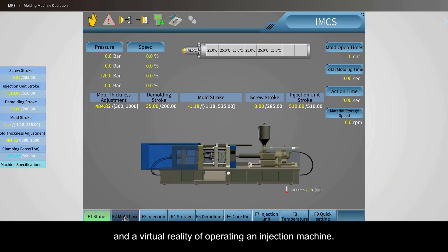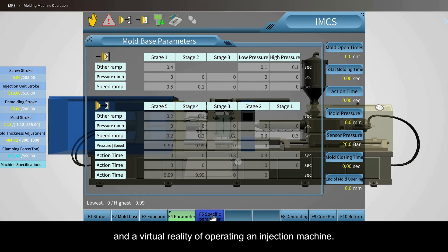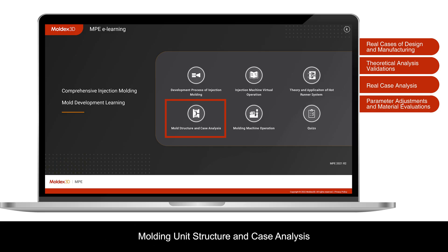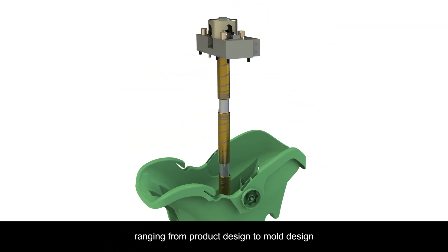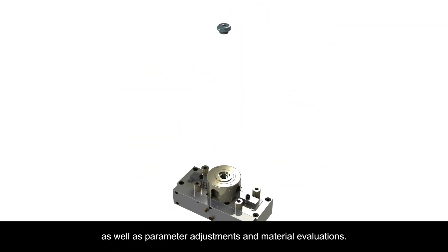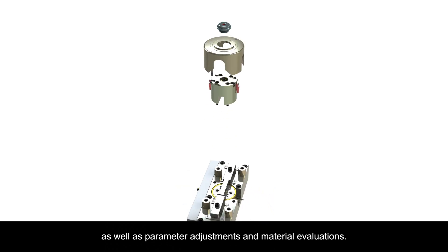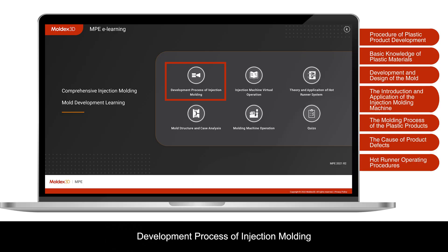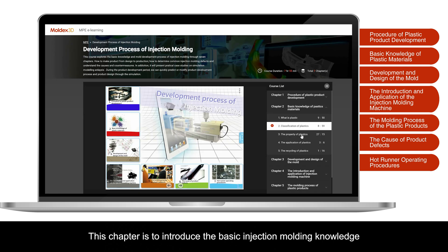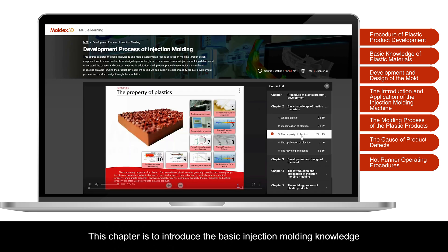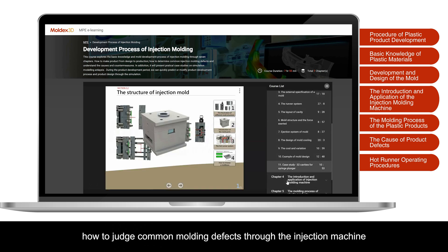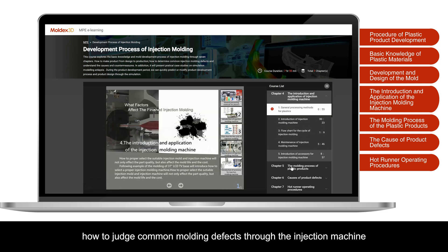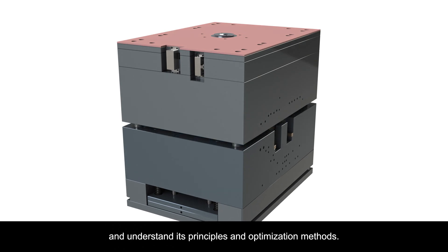The course is divided into five major themes with tutorial videos and case studies. It contains the basic knowledge of injection molding and a virtual reality of operating an injection machine, mold structure, and case analysis. This chapter includes plenty of case studies ranging from product design to mold design, as well as parameter adjustments and material evaluations. The development process of injection molding introduces basic injection molding knowledge, how to judge common molding defects, and understand principles and optimization methods.